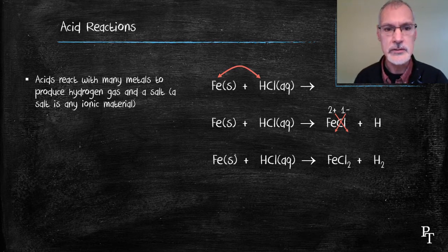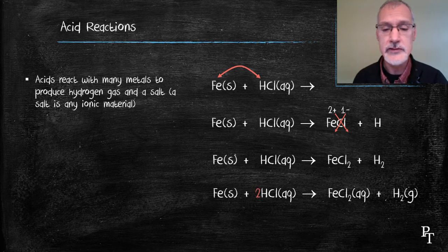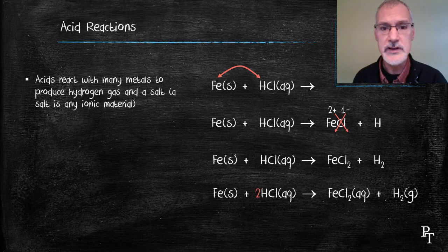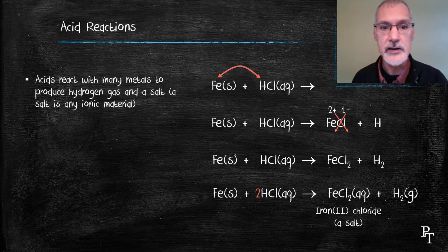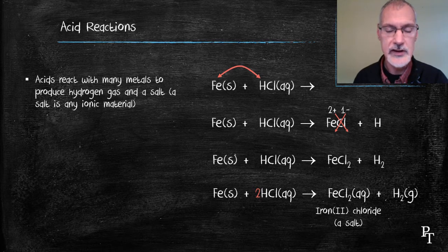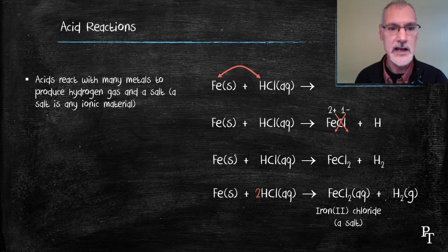So, I'll proceed to balance the equation by putting a two in front of the hydrochloric acid and completing their states. The iron chloride that's produced is the salt and most ionic salts are soluble in water. Hence, I've designated it as being aqueous and the hydrogen as mentioned earlier is a gas.